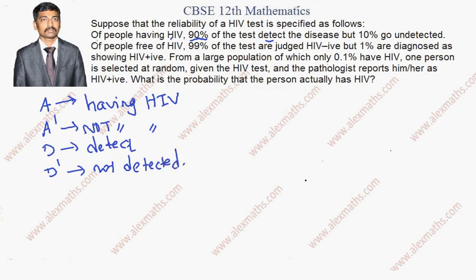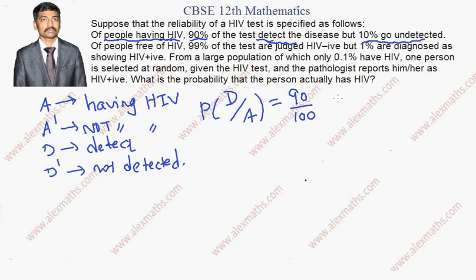Now according to the question, of people having HIV, the disease is already there. 90% of the test detects the disease, meaning it is detected — that is, P(D|A) = 90/100. In the same way, 10% go undetected, so there is a disease but it is not detected, meaning P(D'|A) = 10/100.